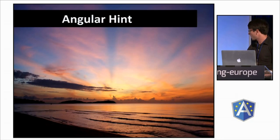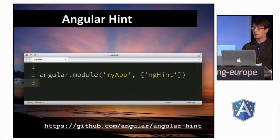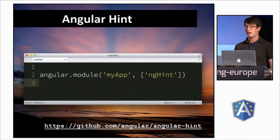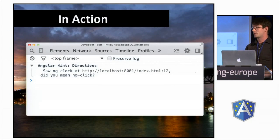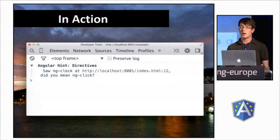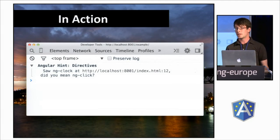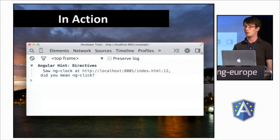The thing that they made was Angular Hint. Angular Hint works like this: you just add ng-hint as a module in your app and suddenly you get these assertions. It is on GitHub and it's pretty well documented. In our example before, we had the ng-clock thing. This can tell you 'look, it's at this line and maybe you want to do this,' which could save you maybe an hour of debugging.